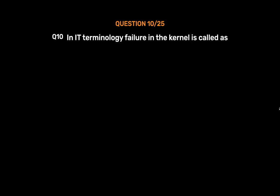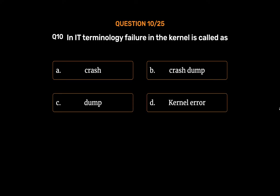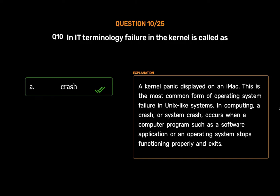Question No. 10. In IT terminology, failure in the kernel is called as. Option A: Crash. Option B: Crash dump. Option C: Dump. Option D: Kernel error. The correct answer is Option A: Crash. A kernel panic is the most common form of operating system failure in Unix-like systems. In computing, a crash, or system crash, occurs when a computer program such as a software application or an operating system stops functioning properly and exits.